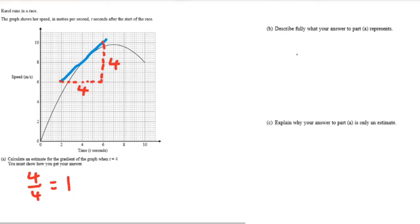Now, describe fully what this answer represents. Well, it represents the acceleration at that instantaneous moment of t equals 4. That acceleration will be completely different at every subsequent point because it's bending. So, it's just at that moment it has that acceleration. Carol has that acceleration.